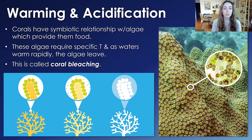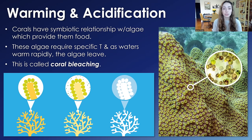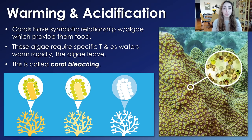Corals are very sensitive to warming because they undergo bleaching — essentially, the algae living in their polyps in a symbiotic relationship leave when the temperature rises too quickly to a level they don't like. The coral has then been bleached, which isn't necessarily immediately fatal but it will die. Coral bleaching is really dangerous for coral reefs, and bleached corals are unlikely to recover unless the algae returns, which is unlikely unless the water cools down.